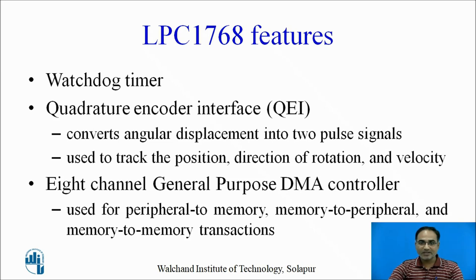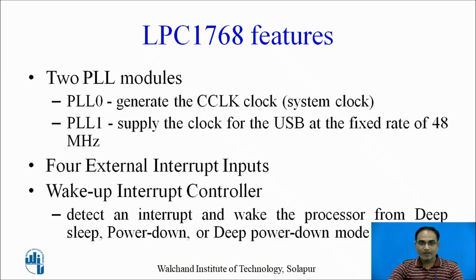There is an 8-channel general purpose DMA controller used for memory-to-memory, memory-to-peripheral, and peripheral-to-memory transactions. There are also two PLLs — programmable phase-locked loops. PLL0 generates the CPU clock, and PLL1 generates the USB clock.